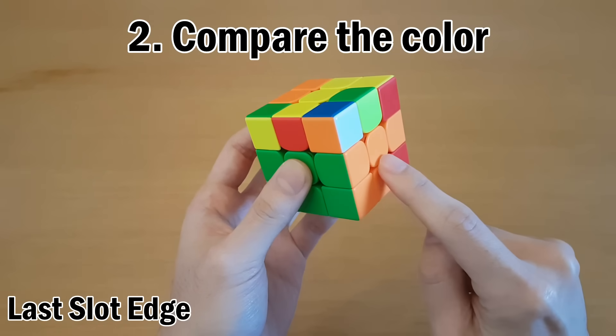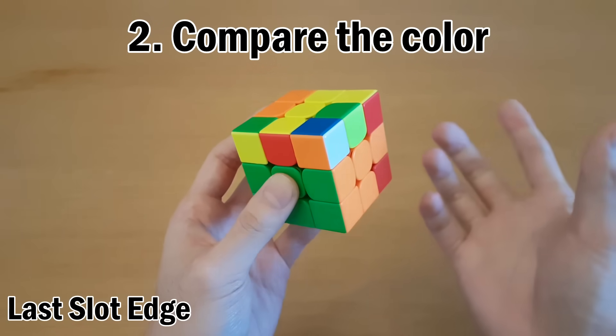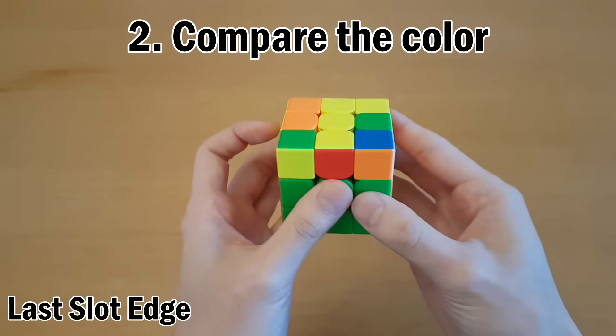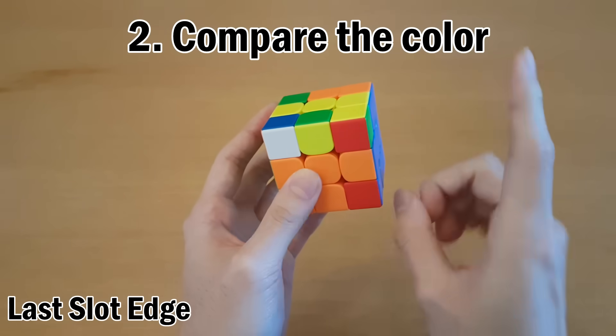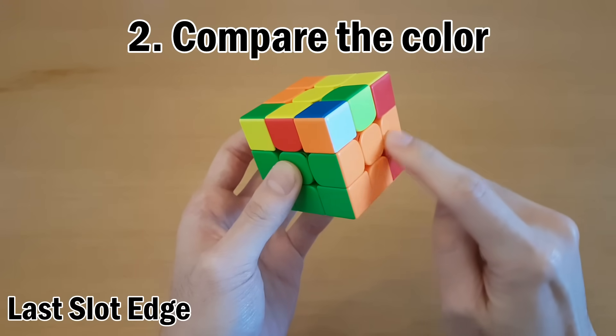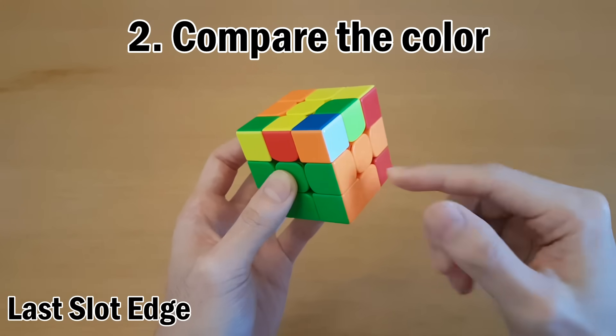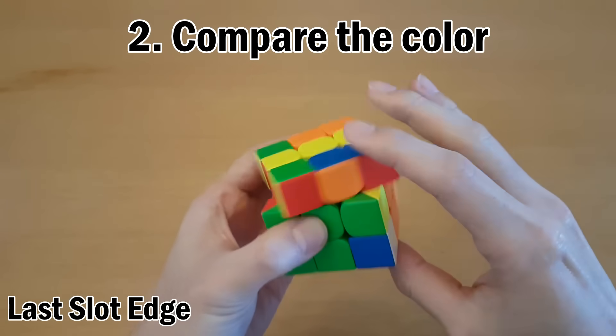Obviously this is going to be a solved edge because the colors match, but a lot of people will still look here or do a cube rotation to help confirm exactly what it is. That is not something you want to do. Instead, you just want to see this color relationship only, and that should be enough to tell you exactly what case it is.